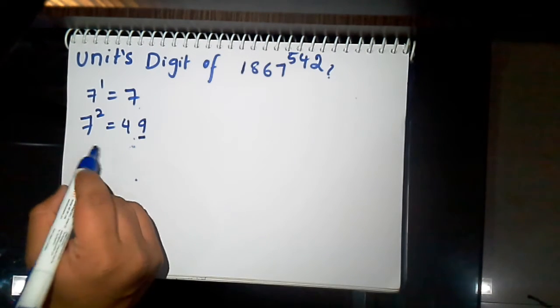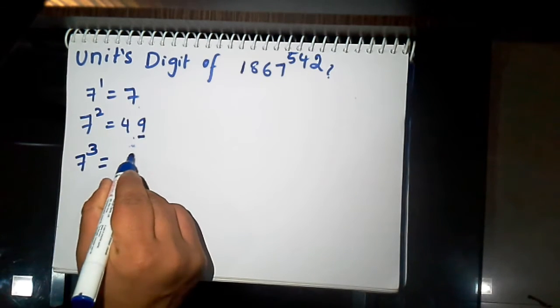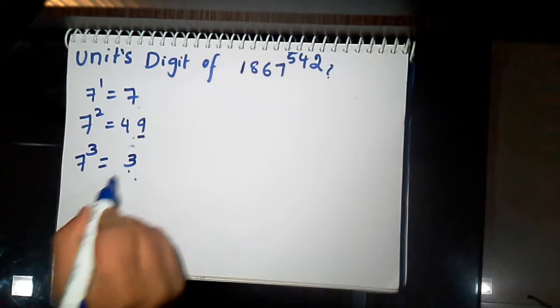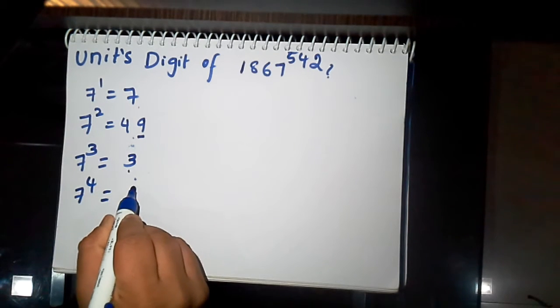Just we need to take unit's digit. 7 cube is ending with 3. Unit's digit is 3. 7 power 4 is ending with 1.